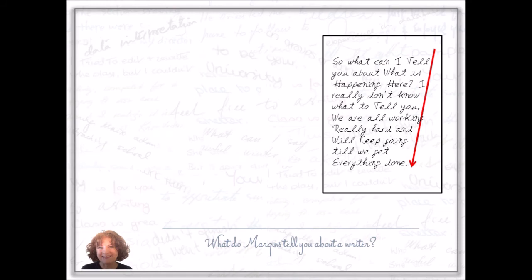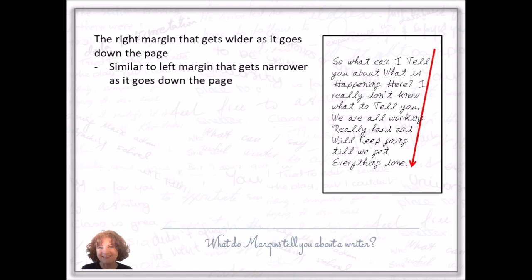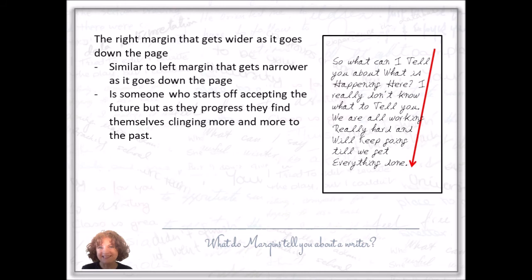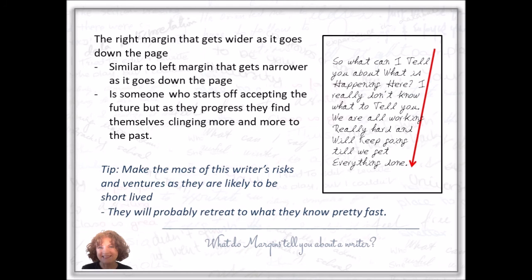The right margin that gets wider as it goes down the page is similar to the left margin that gets narrower as it goes down the page. It's someone who starts off accepting the future, but as they progress they find themselves clinging more and more to the past. Tip: make the most of this writer's risks and ventures, as they're likely to be short-lived. They'll probably retreat to what they know pretty fast.